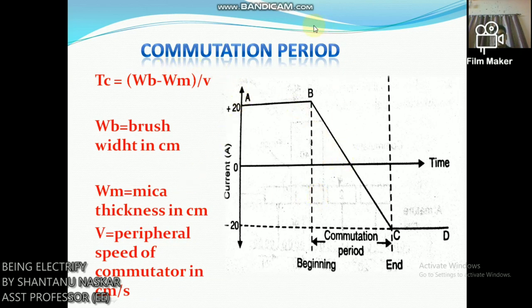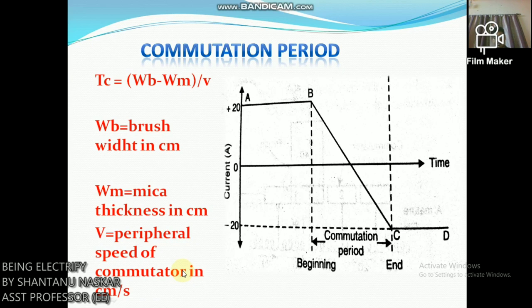The commutation period is given by: Tc = (Wb − Wm) / v, where Wb is the brush width in cm, Wm is the mica thickness in cm, and v is the peripheral speed of the commutator in cm per second. When a coil undergoes commutation, two commutator segments remain short-circuited by the brush. Therefore, the commutation period Tc equals the time required for the commutator to move a distance equal to the brush width minus the thickness of one insulating mica strip.